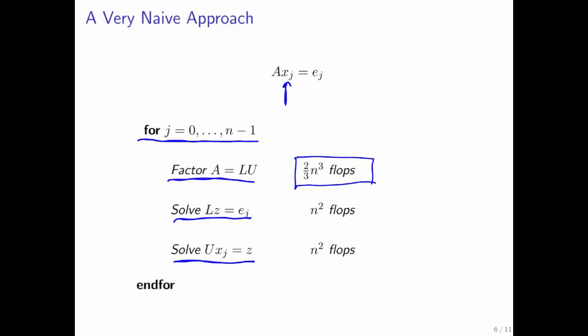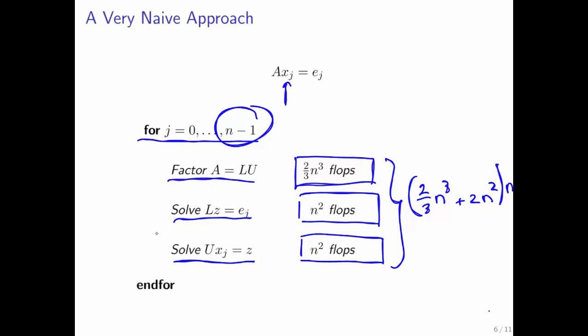Performing the LU factorization costs approximately 2 thirds n cubed floating point operations. And even if you add pivoting to it, roughly that is the cost. And then solving with the lower and upper triangular matrix costs n squared floating point operations per stage. So the total then for each column ends up being 2 thirds n cubed plus 2 n squared floating point operations. But notice that we have to do that n times. So this has to be multiplied by n. And then you end up with a total cost of 2 thirds n to the fourth plus 2 n cubed. And that's a lot of floating point operations. We're going to see that we can do a lot better than that. But keep this number in mind.